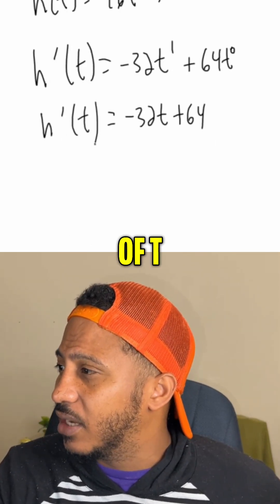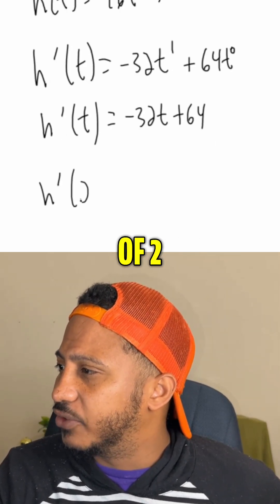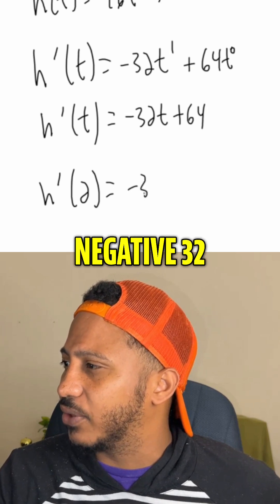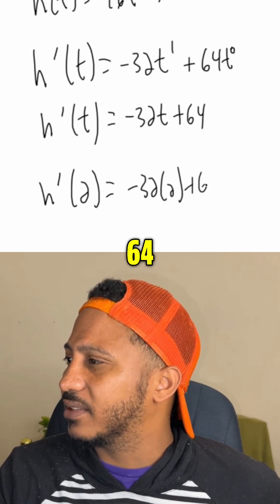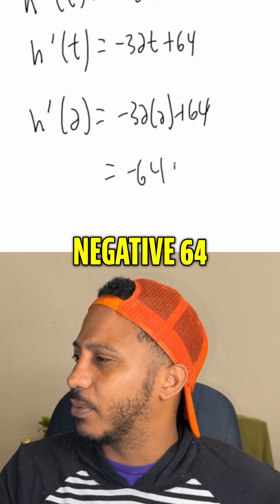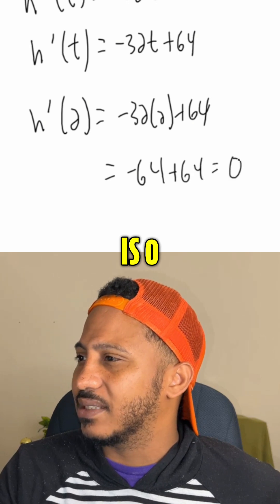find the instantaneous rate of change of height at t = 2 seconds. And so now we'd say, if that's h'(t), we need h'(2). And so plugging in 2, we get -32 times 2 plus 64, which is -64 plus 64, which is 0.